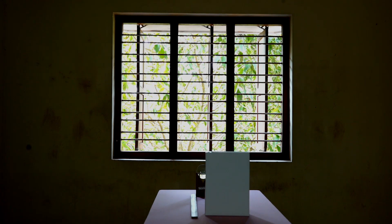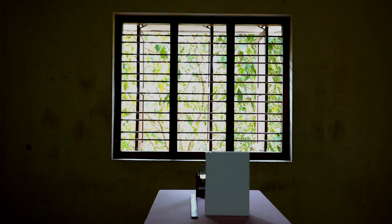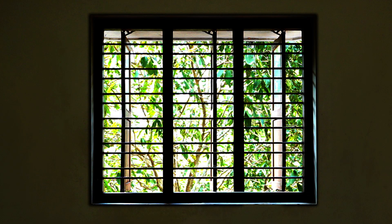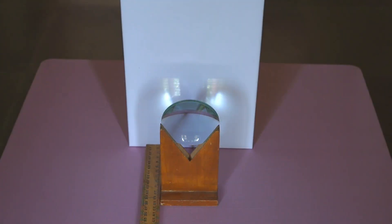As light rays from the tree and the window fall on the lens, the image of the tree along with the window is seen. Notice that the image is inverted. The transparent pane on the top half of the laboratory window is observed at the bottom half in the image.